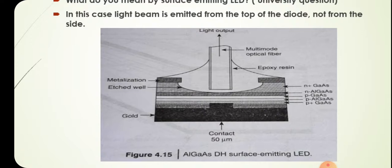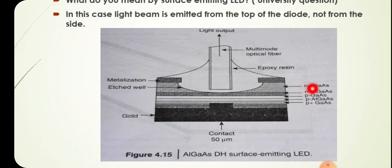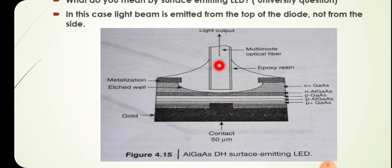The layers consist of a p-plus gallium arsenide layer, p-minus aluminum gallium arsenide layer, n-minus aluminum gallium arsenide layer, and n-plus gallium arsenide layer. The multimode fiber is fixed into the p-n junction diode using epoxy resins. Metallization is done on the n-plus gallium arsenide uppermost layer to take contacts. The p-type materials are p-gallium arsenide and p-aluminum gallium arsenide, where recombination takes place. The n-type materials are n-aluminum gallium arsenide, which is heavily doped for higher carrier concentration.